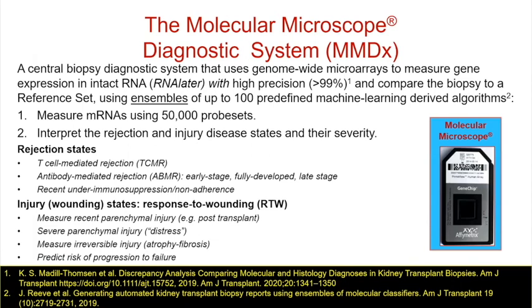The Molecular Microscope system is a central biopsy diagnostic system that uses genome-wide microarrays to measure gene expression in intact RNA preserved in RNA later. We don't use formalin-fixed RNA because formalin irreversibly damages the RNA. Our measurements are very precise — greater than 99% precision. We compare the biopsy to a reference set, usually thousands of biopsies, using ensembles of predefined machine learning algorithms. We measure 50,000 probe sets, interpret injury states and their severity, looking for TCMR, ABMR, non-adherence, and wounding states including recent parenchymal injury, severe injury, and atrophy fibrosis.